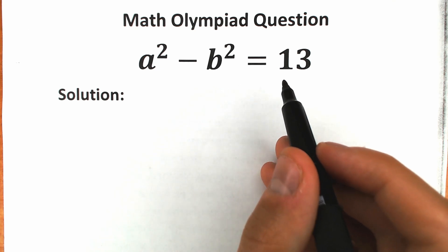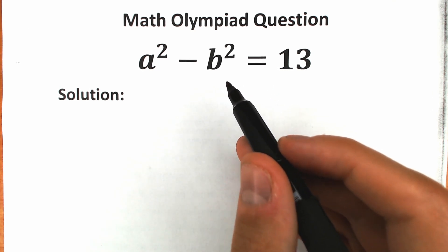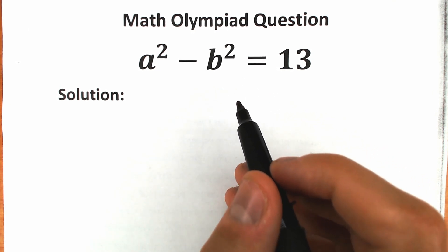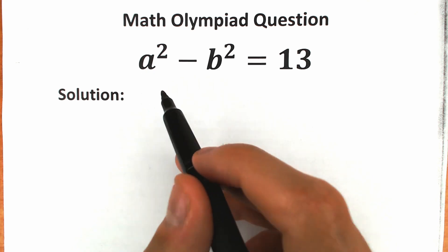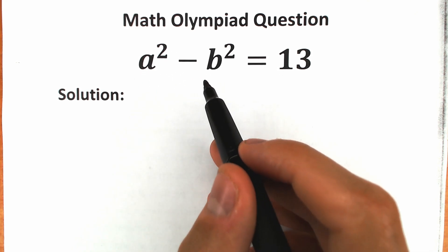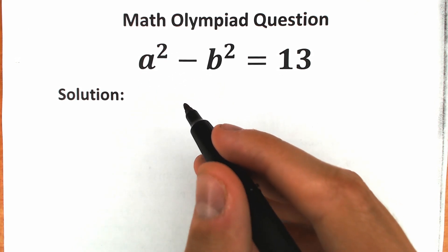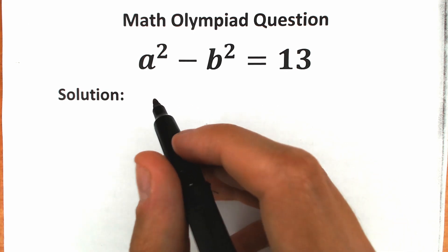a squared minus b squared equals 13, and we need to find a and b. So how can we do this? First of all, we can easily simplify our left hand side, because we have a squared minus b squared. This is a well-known formula, the difference of squares.